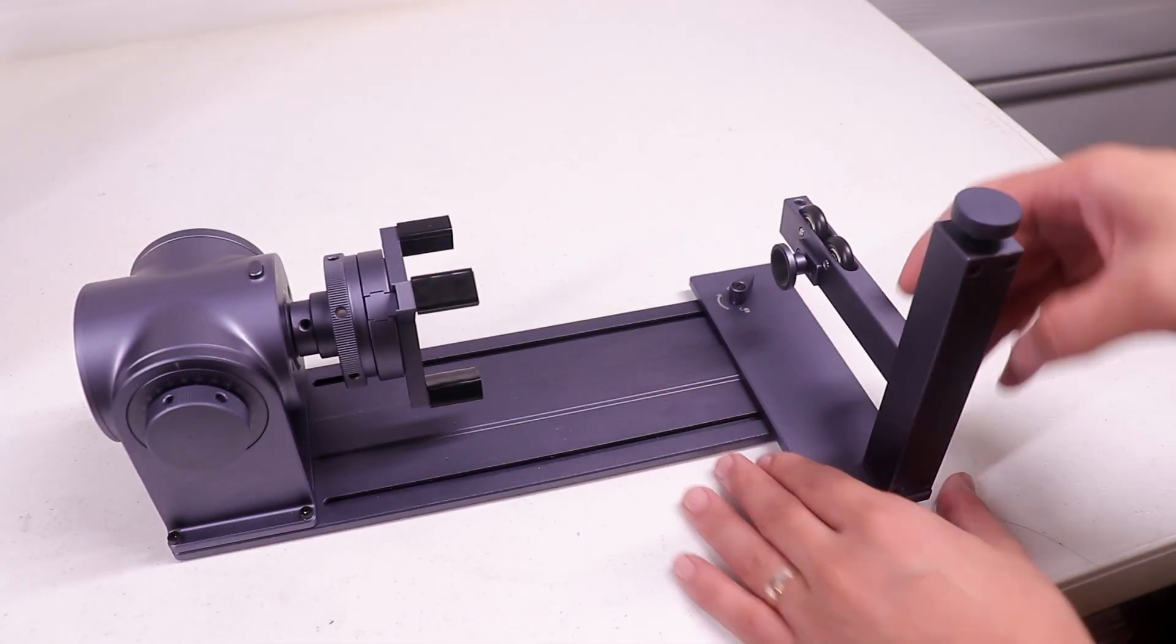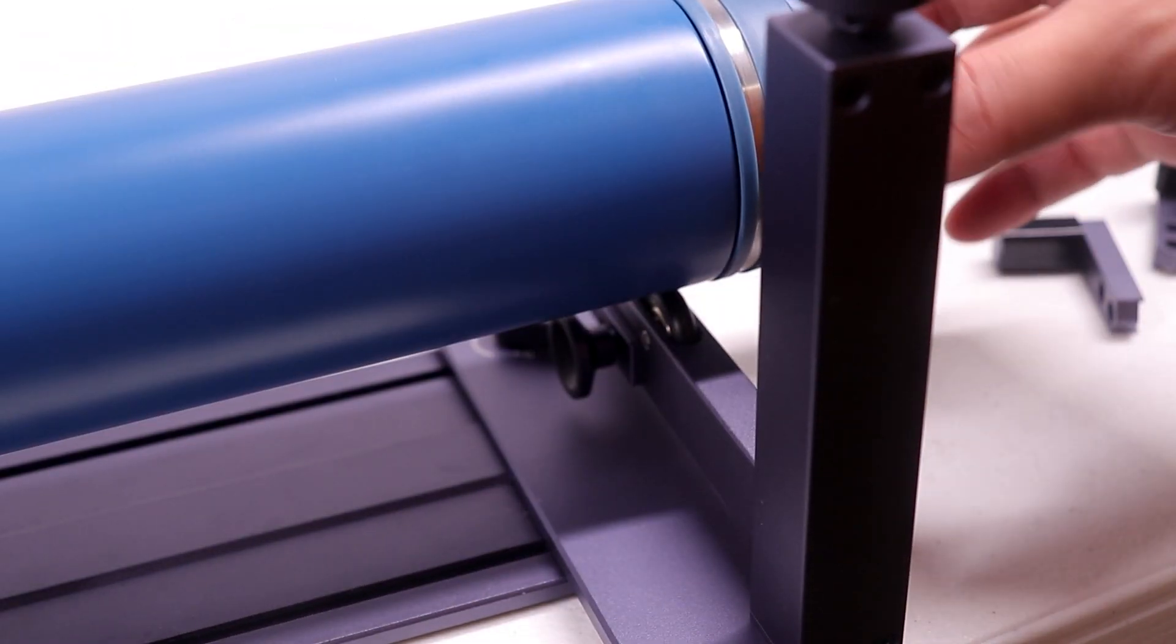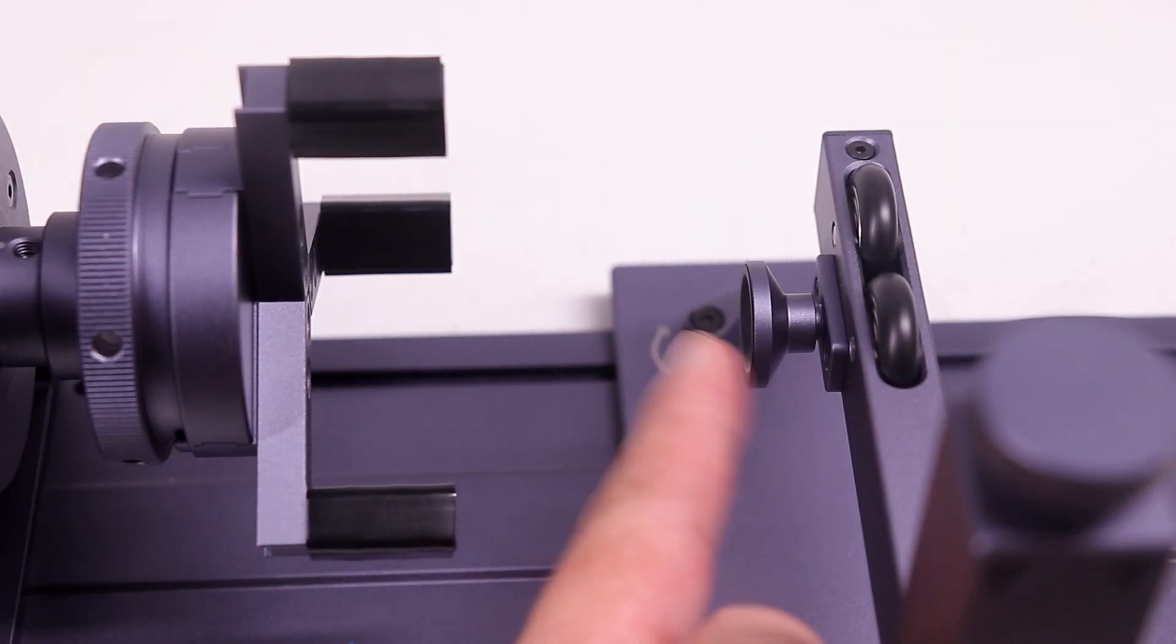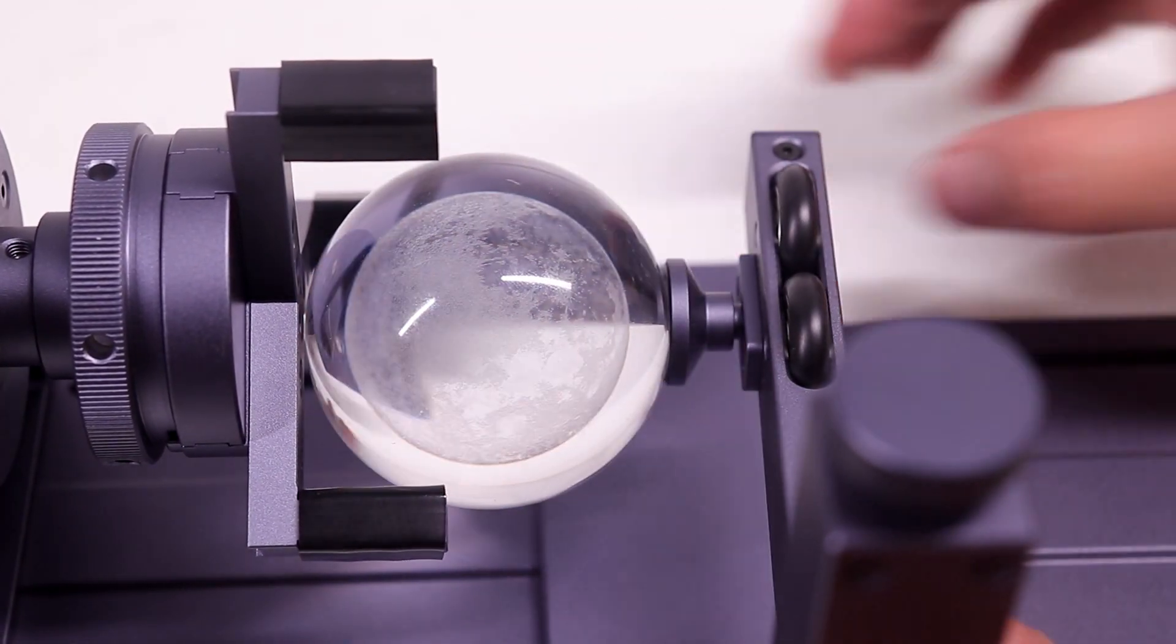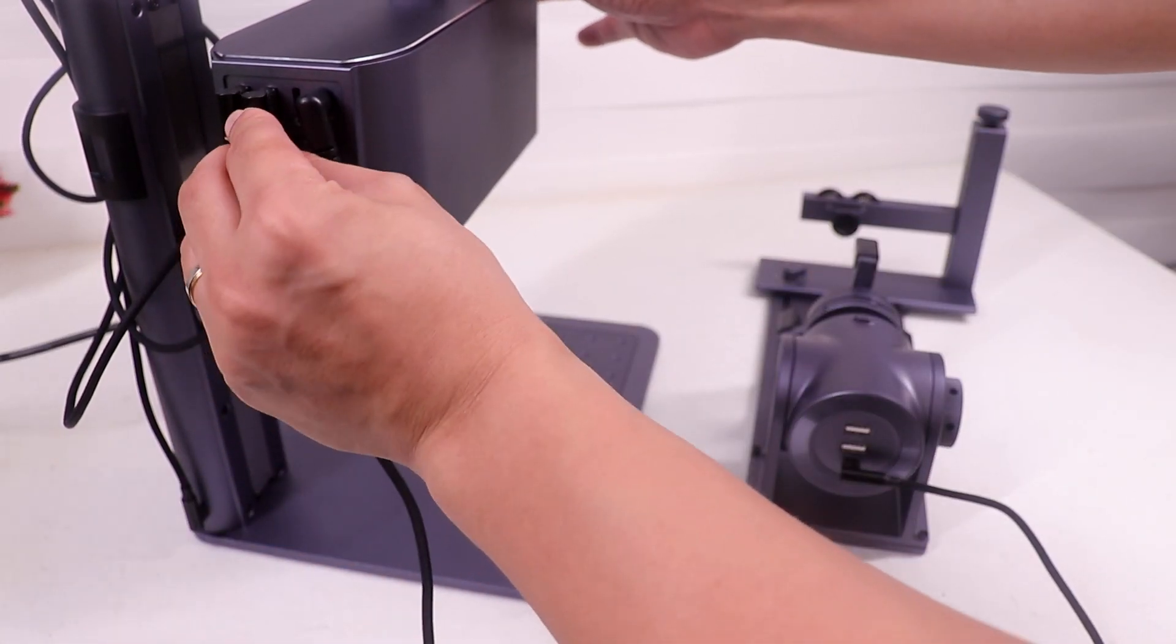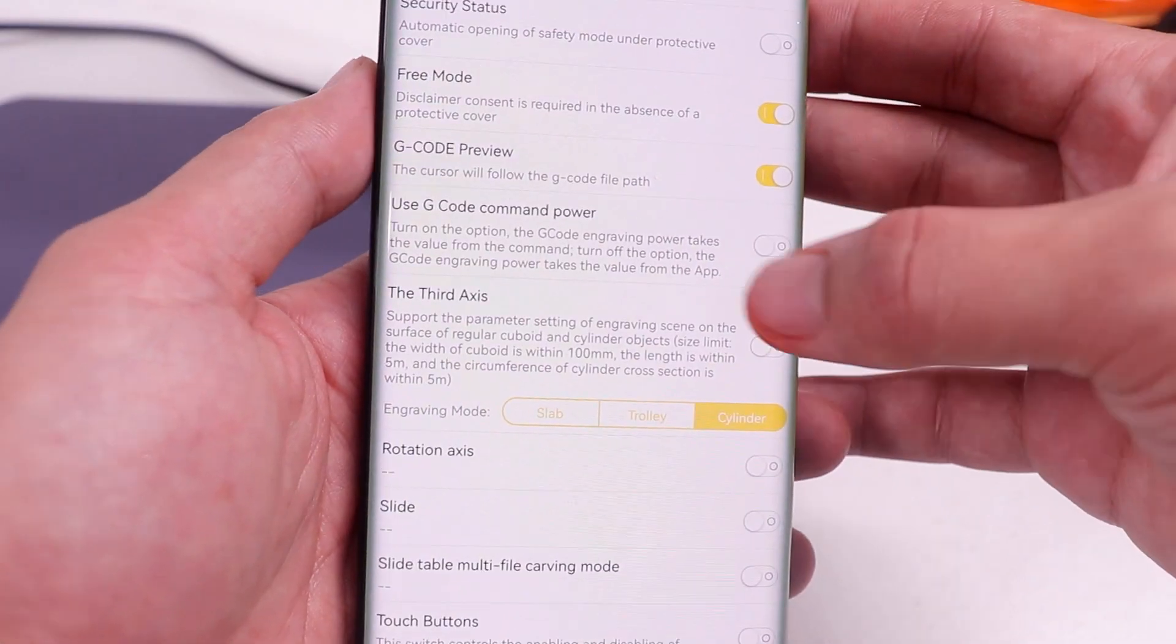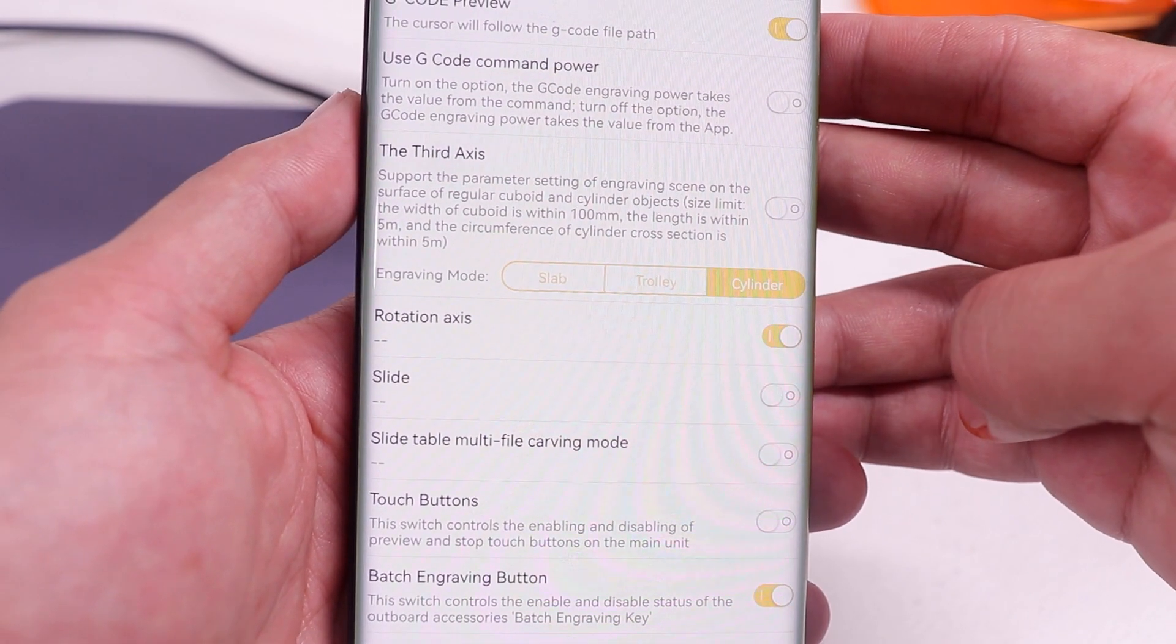And then all you have to do is slide it in and lock it in place. So this is a good support for any cylindrical objects. And then this one right here holds round objects like this. And by the way, to use this, just connect the rotary to the laser pecker, then go to the app and enable the rotary axis and that's it.